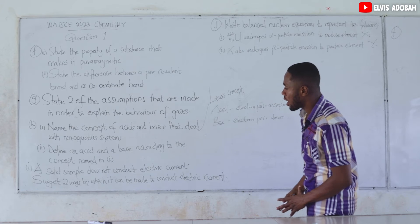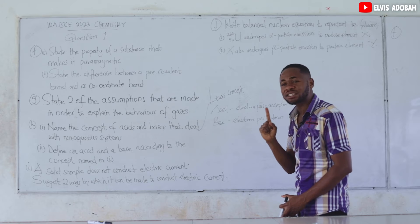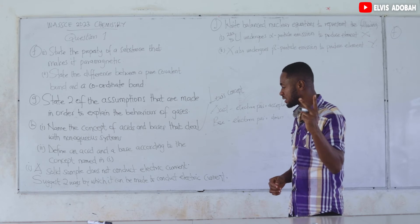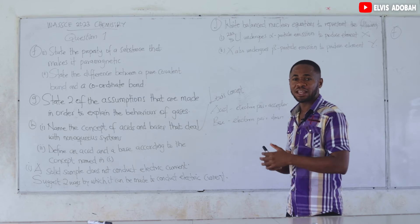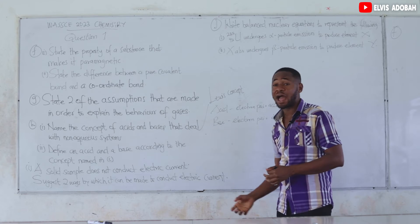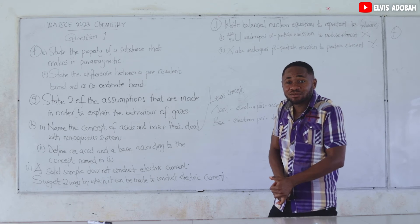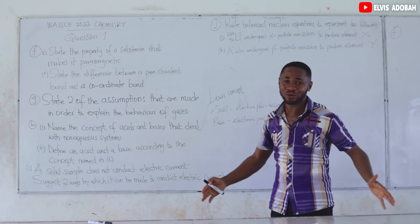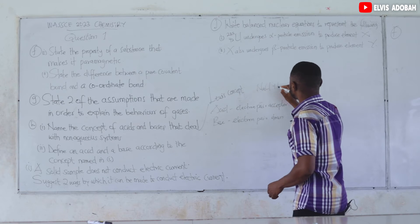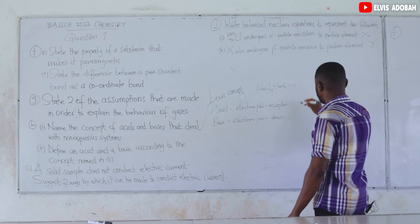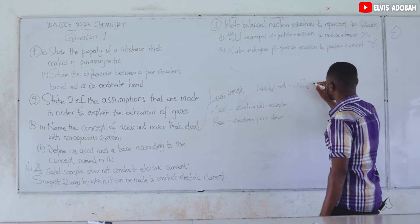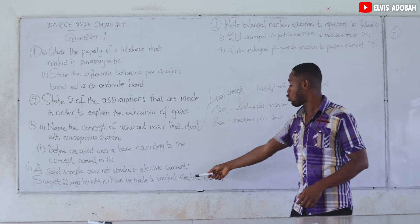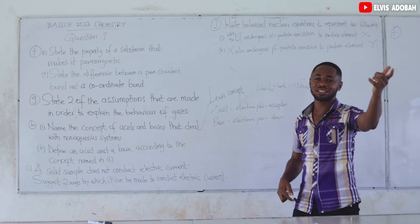Question 1I: a solid sample does not conduct electric current — state two ways to make it do so. The first way is to melt the solid sample. When you melt the sample, it breaks into ions. For instance, if you heat sodium chloride, it melts into sodium ions and chloride ions in the liquid state, and since they are ions, they can now conduct electric current.